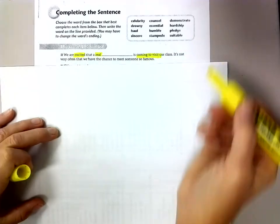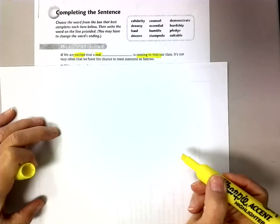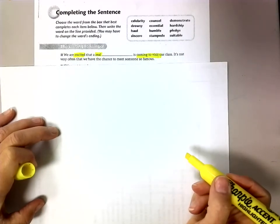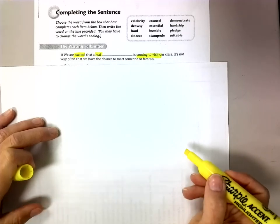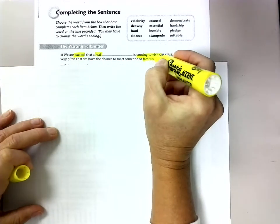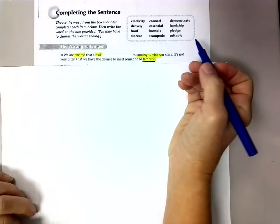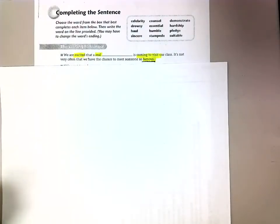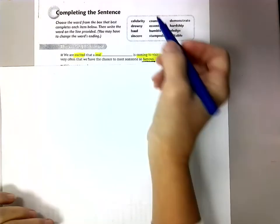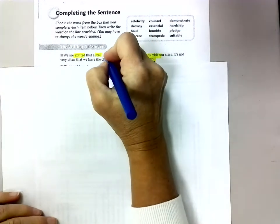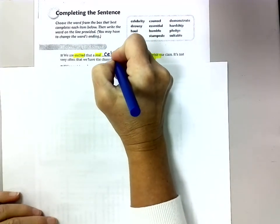And they're coming to visit. It is not very often that we have the chance to meet someone so famous. Well, there's a great word right there, famous. That means it has to be somebody that's real and they're famous. So I'm going to underline that. And when I look up at my words, I can see, and I remember this, somebody that's real or famous. Look, there's the very first one I see, and that's going to be celebrity. So I'm going to write that word in that blank.